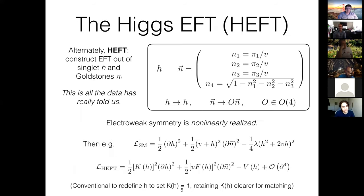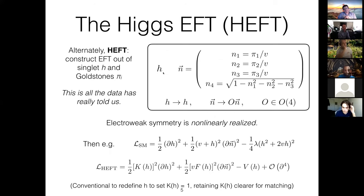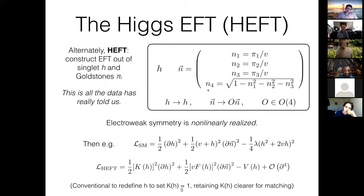That's one choice. The other choice is to not assume anything about how the scalar we've discovered at the LHC relates to the Goldstones of spontaneously broken O(4) symmetry. The other option is to construct what we call the Higgs EFT, or HEFT, which involves saying the Higgs we've discovered is a real scalar degree of freedom h, and then packaging the Goldstones separately as the Goldstones of O(4) broken to O(3).